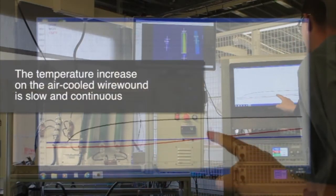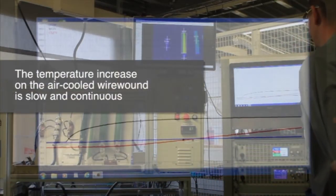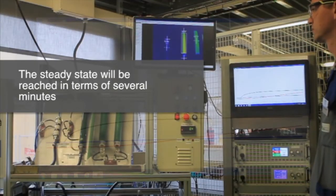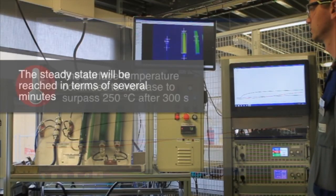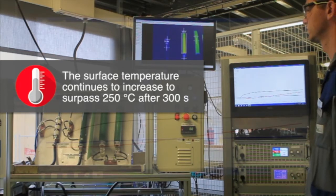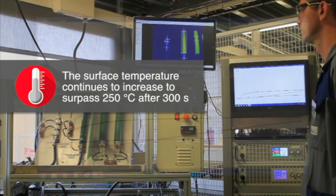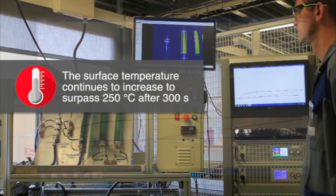The temperature increase on the air cooled wire wound is slow and continuous. The steady state will be reached in terms of several minutes. The surface temperature continues to increase to surpass 250 degrees C after 300 seconds. That's the maximum our thermal camera setup can record.